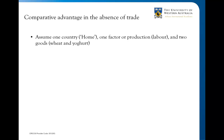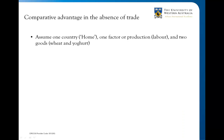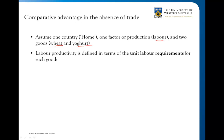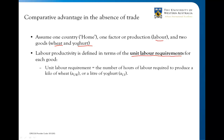At the moment we're not looking at international trade, so we're just looking at one country — we'll call that home. We've only got one factor of production, and that's labour. And we're only producing two goods: wheat and yoghurt. We want some concept of labour productivity, which we define in terms of the unit labour requirements of each good — simply the number of hours of labour required to produce a kilo of wheat (ALW) or a litre of yoghurt (ALY).